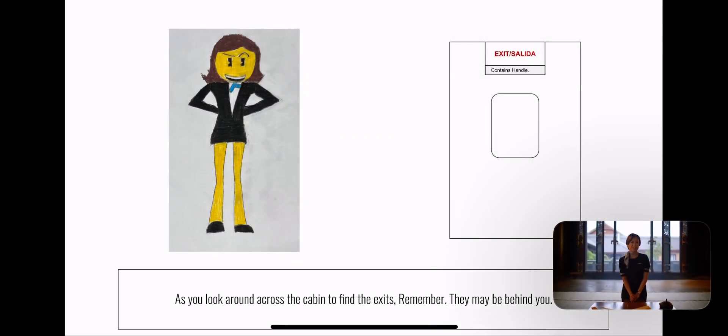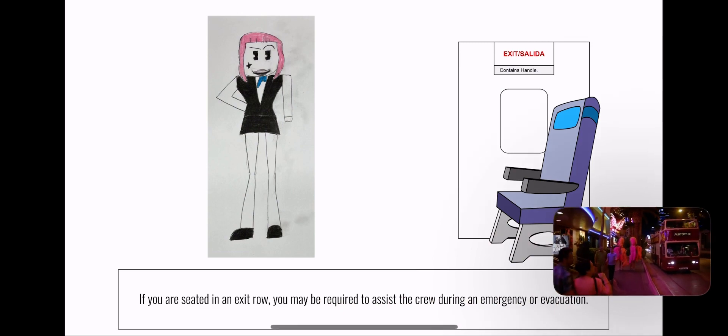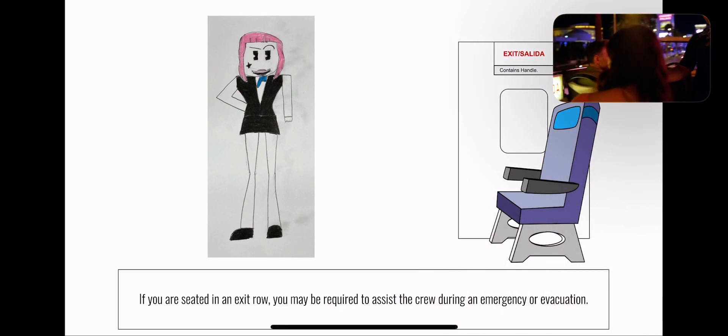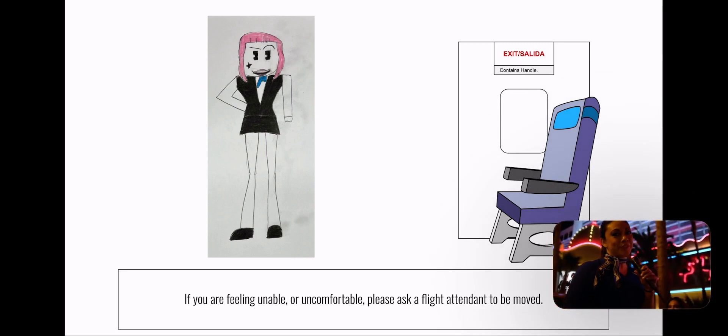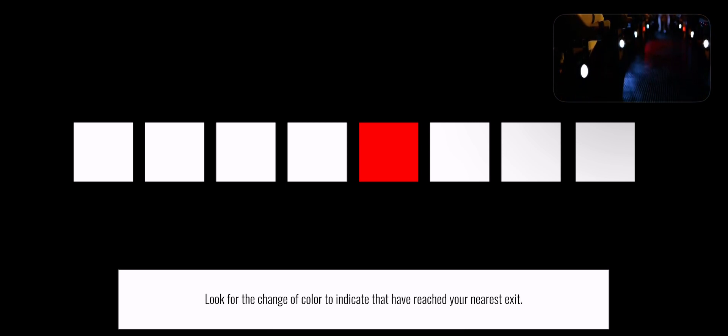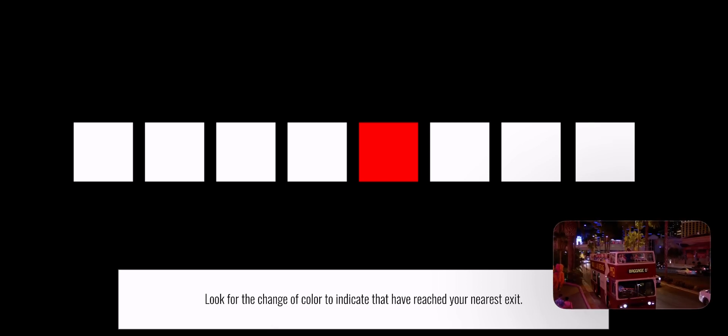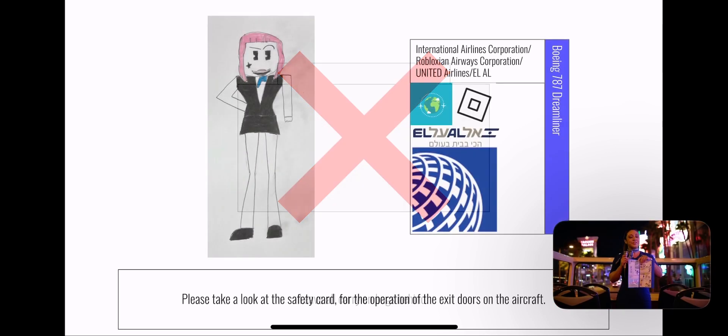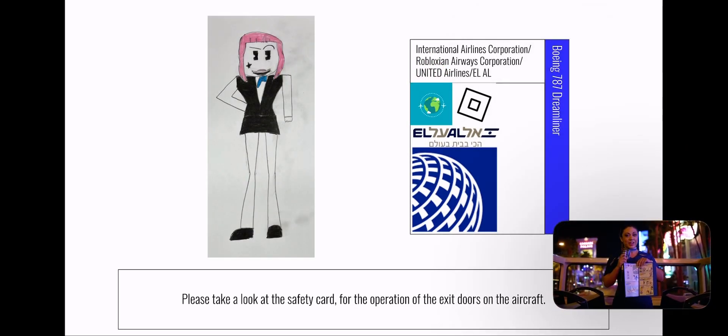As you locate the two exits near your seat, remember they may be behind you. If you're seated in an exit row, you may be asked to assist the crew during an evacuation. If you're unable or uncomfortable, please ask a flight attendant to be moved. If you must evacuate the aircraft, exit path lights on or near the floor will illuminate and guide you to the exit. Look for a change in color or an exit sign to indicate that you have reached an exit. Leave all carry-on bags behind. Please refer to the safety card near your seat for the operation of the exit doors on this aircraft.